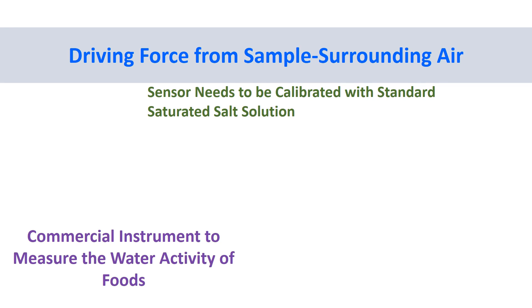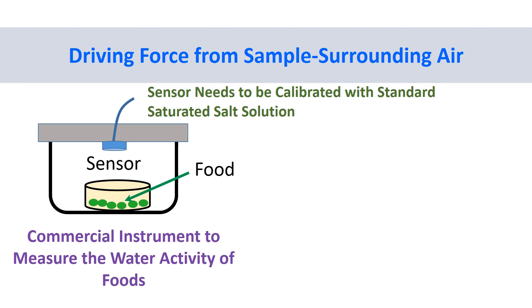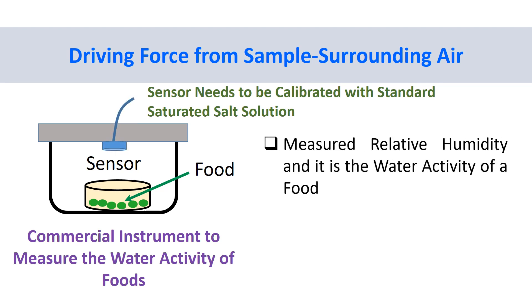Chemical potential is the driving force for measuring water activity. In commercial water activity meters, a sensor is placed on the top roof of a small closed chamber. A sample in a container is then placed inside the chamber to reach an equilibrium energy state of water inside the sample and the surrounding air. If the sample is equilibrated with the surrounding air, then water activity of the sample is the same as the relative humidity of the surrounding air.